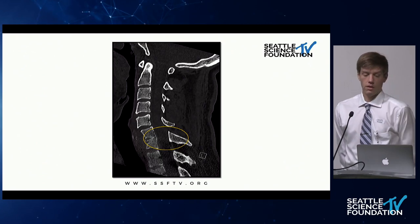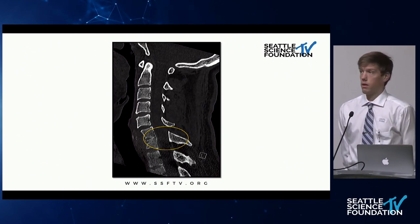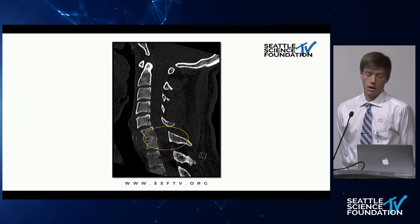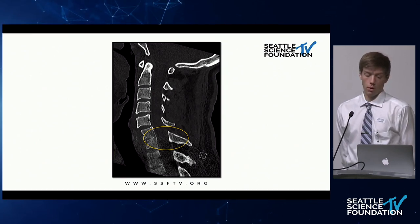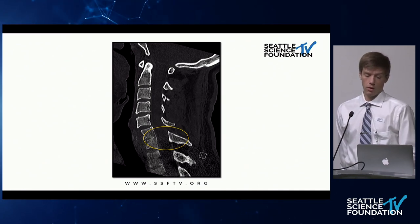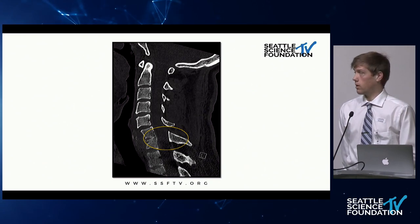Additionally, and pretty interestingly, this patient had likely congenital fusion of C6 and C7, circled here in yellow. He also had a fracture through the C6 segment at that fusion.